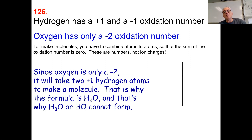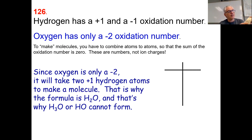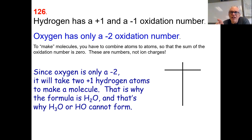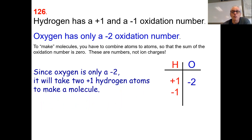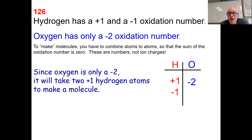Hydrogen has a positive one and a negative one oxidation number. Oxygen has just a negative two. When we want to figure out all the possible hydrogen and oxygen compounds, we use a T-chart — H on the left, O on the right — and we write down all the oxidation numbers and figure out what works and what doesn't.